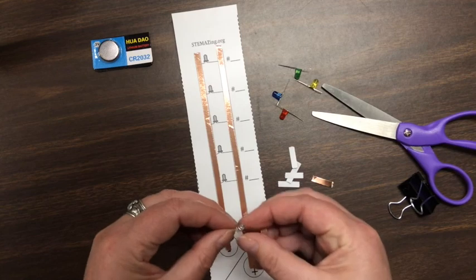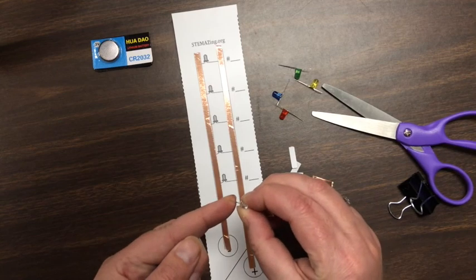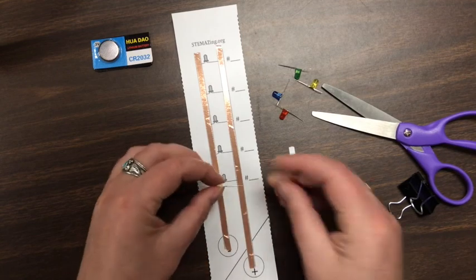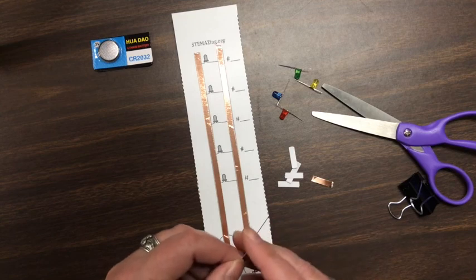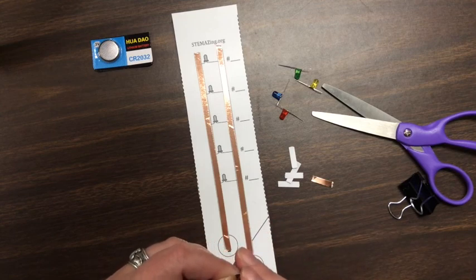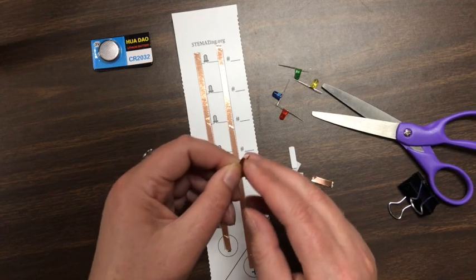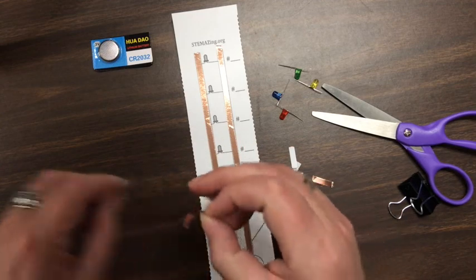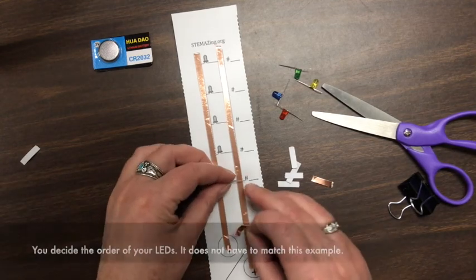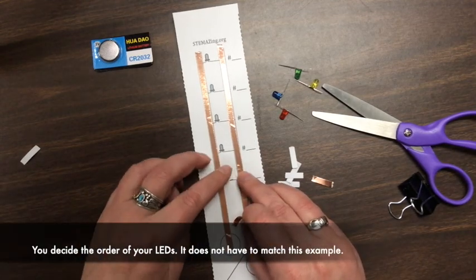So the order that you put the LEDs in doesn't matter, but we're going to bend up the negative lead a little bit so it'll be off of the negative side and be open for our switch. Then take one of these small pieces of tape and get it started, pull it off the backing. Because it's little, it won't curl up too much.